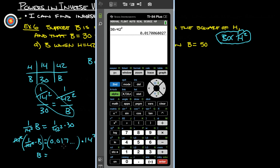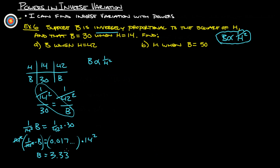The good news is we already have this 1 over 42 squared times 30 already in there, so now we just do this times 14 squared and push enter, and that means that B in this case is going to be 3.33.